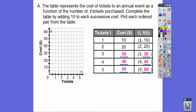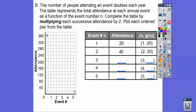When we graph these, we plot 1,10 — over 1, up 10. The tick marks go by 5's. Then 2,20; then 3,30. Here they are all plotted. These are called discrete because we do not connect them — we can't sell half a ticket, so we can only sell whole-number tickets. That's what makes this a discrete function.